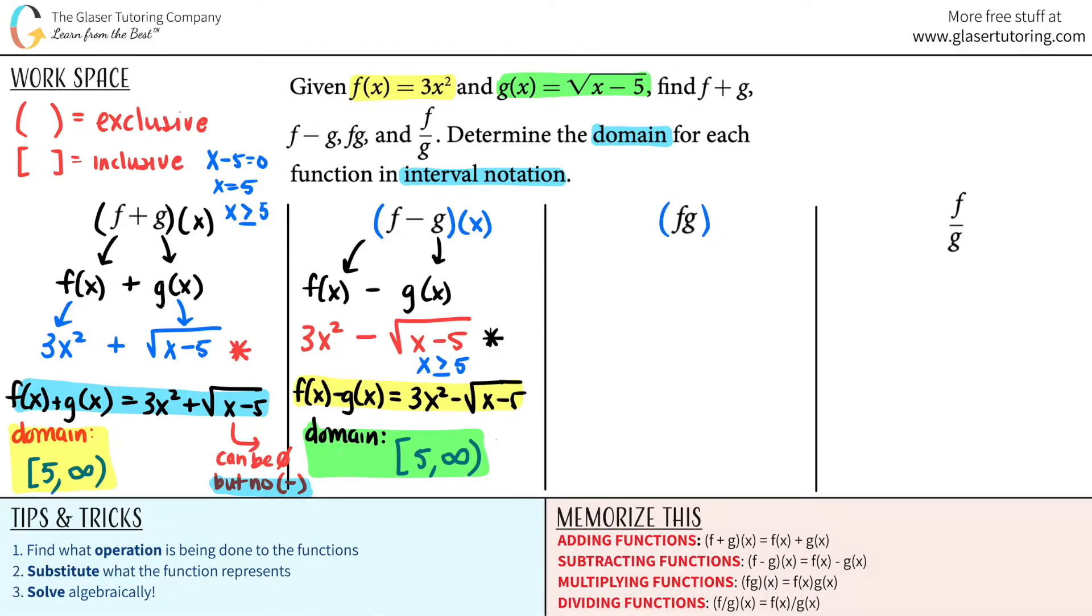The third one, multiplication, f times g of x. This is the same as f of x times g of x. So we clearly know what f of x is and we clearly know what g of x is. So I'm just going to plug it in. f of x is three x squared times g of x, which was rad x minus five. I'm going to put a star here because this is where I'm going to do my domain just in case I can simplify. But I'm looking at this and I can't really simplify this. So f of x times g of x equals three x squared rad x minus five. That is the answer for the function. This is the new function in which you multiplied those two functions together.